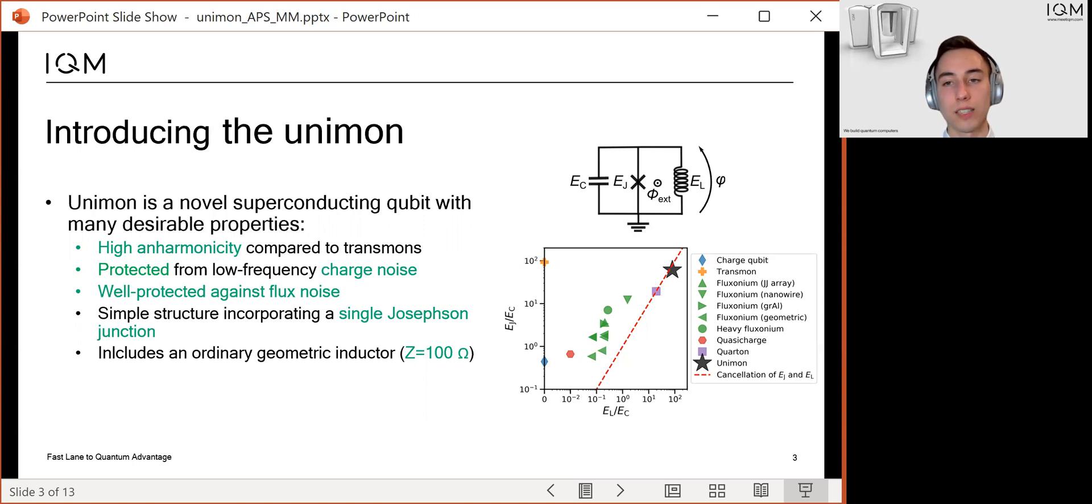Secondly, the Unimon is protected against low frequency charge noise and magnetic flux noise. The Unimon also has a simple structure containing only a single Josephson junction. And also importantly, no superinductors are needed in the Unimon.